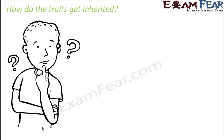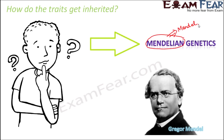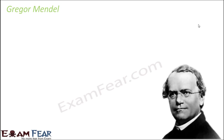The main question is: how do traits get inherited — what actually carries them from one generation to the next? This is where we talk about Mendelian genetics. Genetics is the study of heredity. Mendelian genetics is the genetics given by the famous person known as the father of genetics — Gregor Mendel. We will now see how Gregor Mendel performed his series of experiments and came up with the basic rules of inheritance.